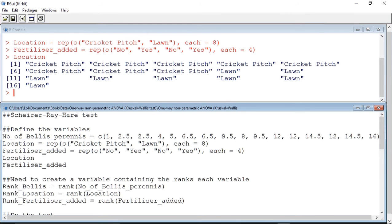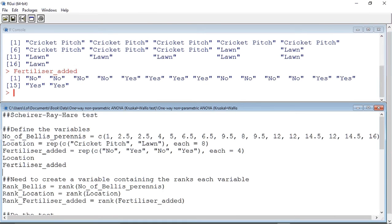So this is location. Indeed, we can see we have cricket pitch eight times followed by lawn eight times. And for fertilizer added, the variable is as expected.